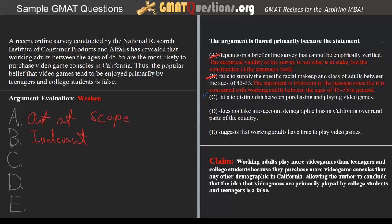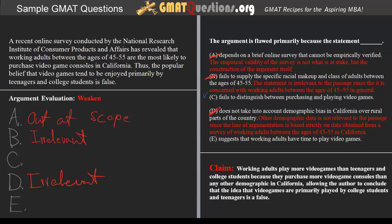D: 'The argument is flawed primarily because the statement does not take into account demographic bias in California over rural parts of the country.' D has a problem very similar to B — it brings in demographic considerations that are irrelevant to the population being discussed. Other demographics outside of California are irrelevant to the argumentation, since the line of argumentation is based strictly on data obtained from a survey of working adults between 45 and 55, specifically in California. So D is incorrect.